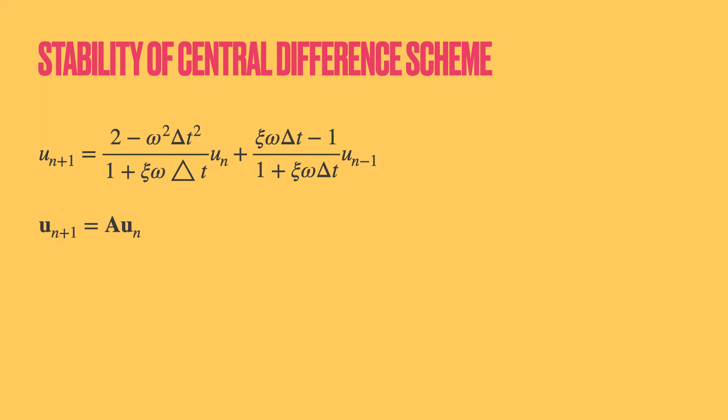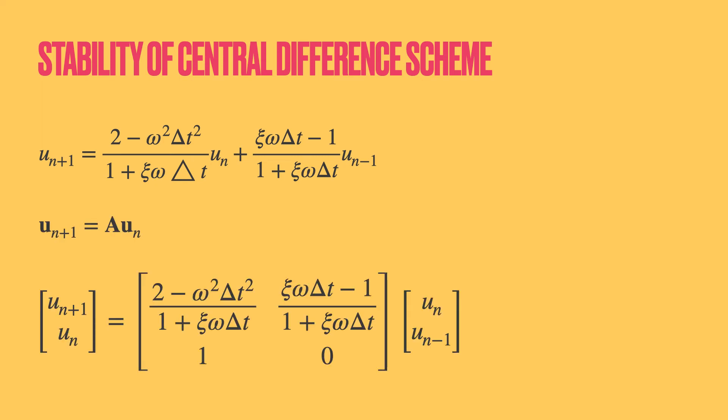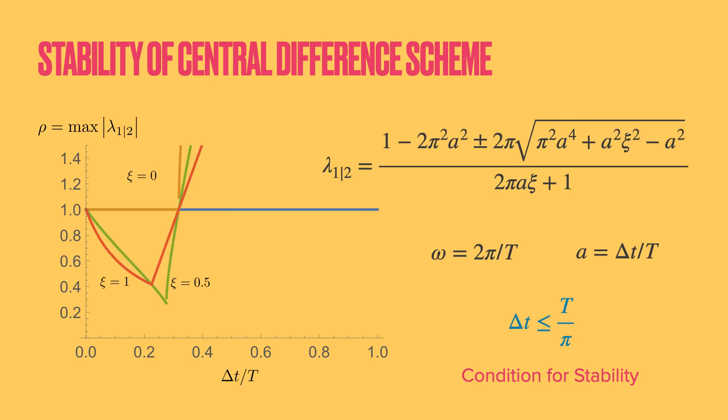We can time discretize this equation and introduce the central difference approximations. Here is the amplification matrix for the central difference scheme. The second row is introduced just to obtain a matrix form of the expression. Given the amplification matrix, we can compute the eigenvalues and also now compute the spectral radius. The eigenvalues can be computed using the classical formula using the characteristic polynomial you studied in school.